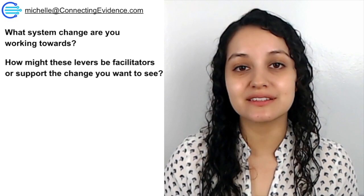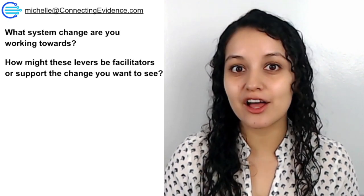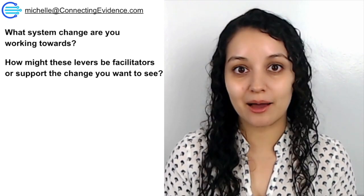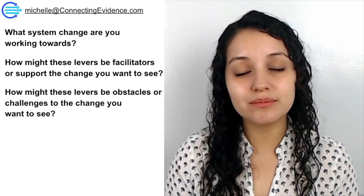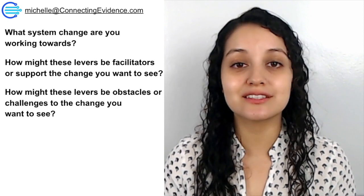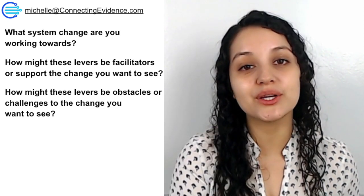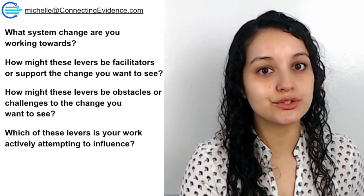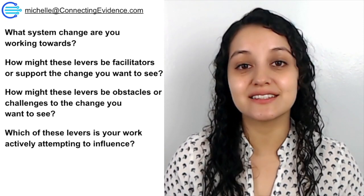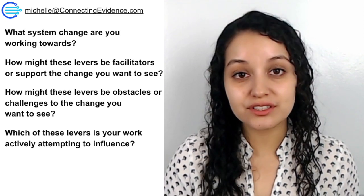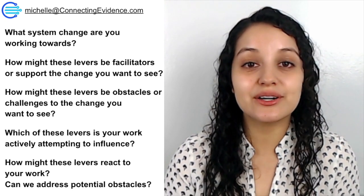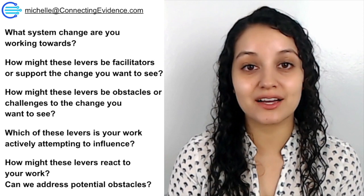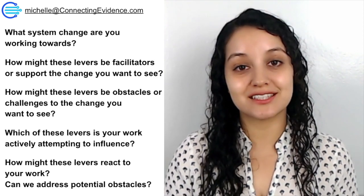The first reflection question is: how are these levers advantages or supporting the changes you want to see? On the flip side, consider the opposite: how are these levers obstacles or challenges to the systems change you want? Then consider the work you're actually doing — the activities you're doing in order to see systems change. Which of the levers is your work specifically trying to influence? And finally, consider how your work might affect or influence any of the other systems change levers.